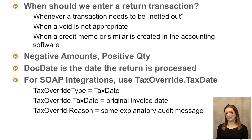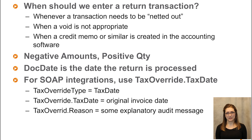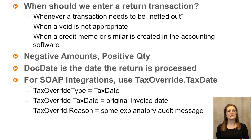What if we don't want to void a document because we're processing a return? You should process returns and reflect them in our system whenever a transaction needs to be netted out, when a void is not appropriate, or when a credit memo or similar is created in your accounting software. On credits, always send us negative amounts and positive quantity — that's how our system expects to see returns. On returns, document date needs to be the date the return is processed, because that's what we'll use for reporting. If somebody purchased something three months ago but didn't return it until today, make sure that return is processed in this month's reporting period, not the one three months ago. For SOAP and REST integrations, also send us the tax override tax date to make sure we use the tax rates as of the original purchase date. To do a tax date override, send tax override type as tax date, tax override tax date as the original invoice date, and tax override reason as an explanatory audit message.